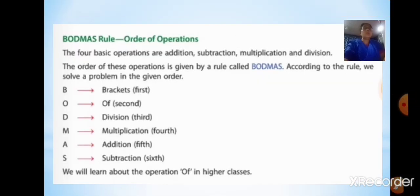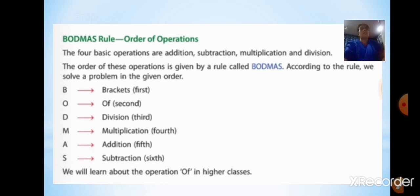According to the BODMAS rule, when there are more than one basic operation in a sum, we follow the order: B stands for Brackets, O for Of, D for Division, M for Multiplication, A for Addition, and S for Subtraction. We solve the brackets first, then from left to right, whichever operation comes first we perform it according to this order of operations.